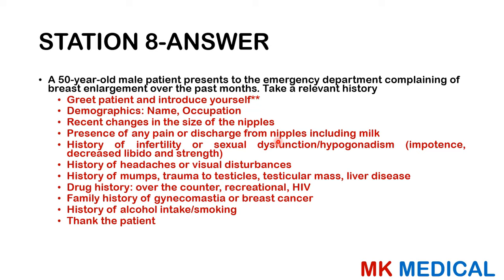This could be a tumor producing hormones — common with pituitary adenomas producing prolactin, or small cell carcinomas of the lung. Ask about cough, hemoptysis, and chest pains. Ask about history of mumps, trauma to the testes, or testicular masses. Ask about liver disease, over-the-counter or recreational drugs — finasteride, HIV medication. Ask about family history of gynecomastia or breast cancer, alcohol intake, and smoking. Thank the patient when done.